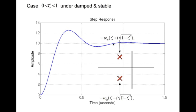The top pole is at minus omega_n * zeta plus i times the square root of (1 minus zeta squared), and the bottom pole is at minus omega_n * zeta minus i times the square root of (1 minus zeta squared). The fourth case is the undamped case, where zeta equals 0. The transfer function becomes K_dc times omega_n squared divided by s squared plus omega_n squared.